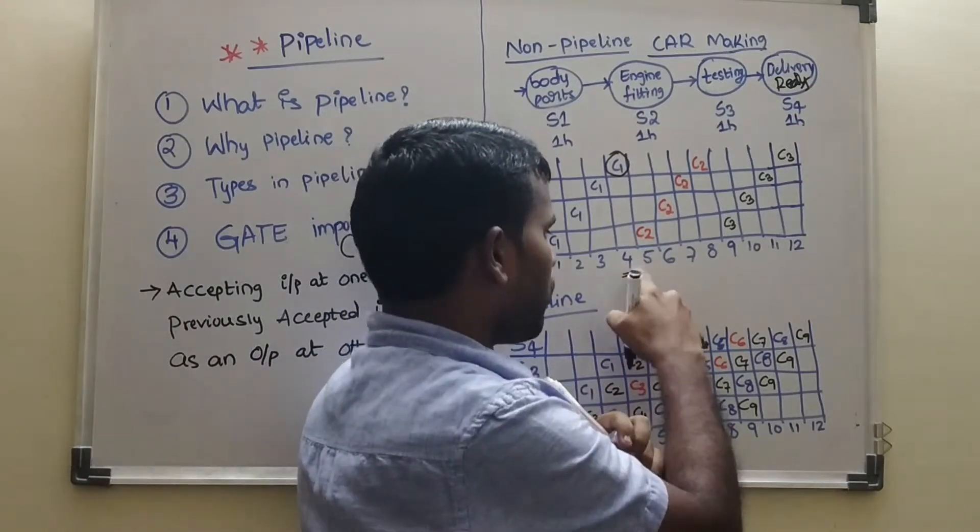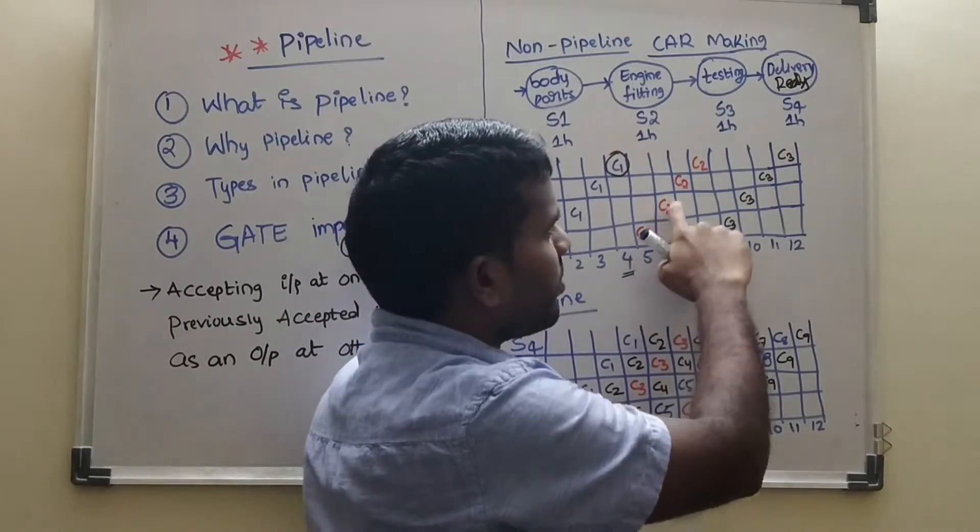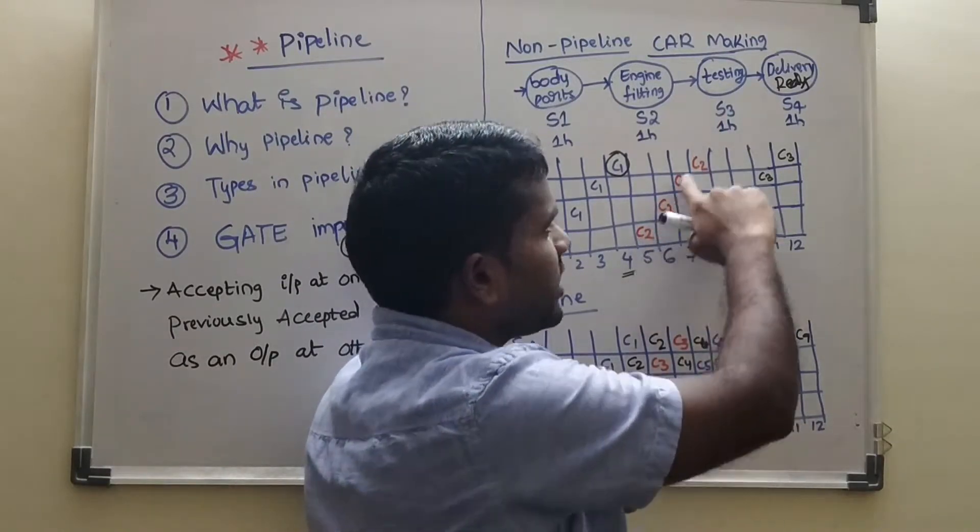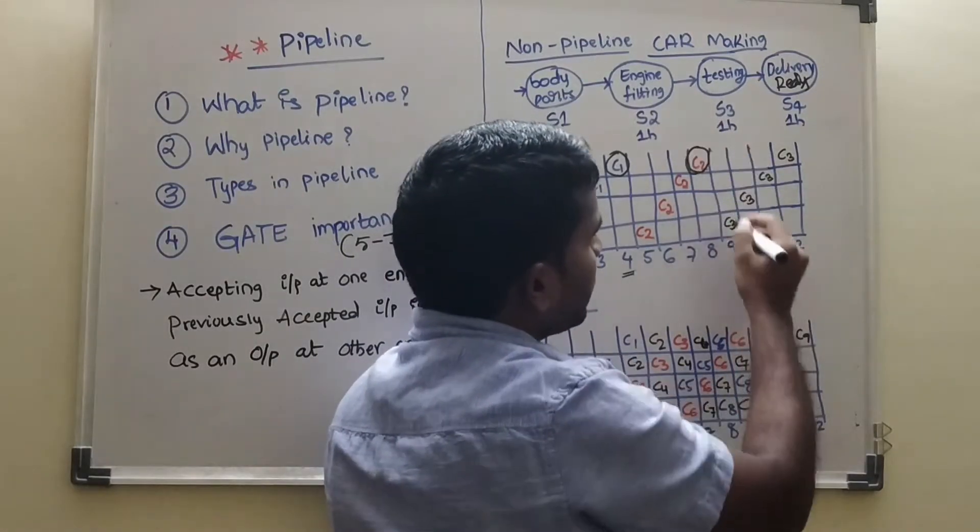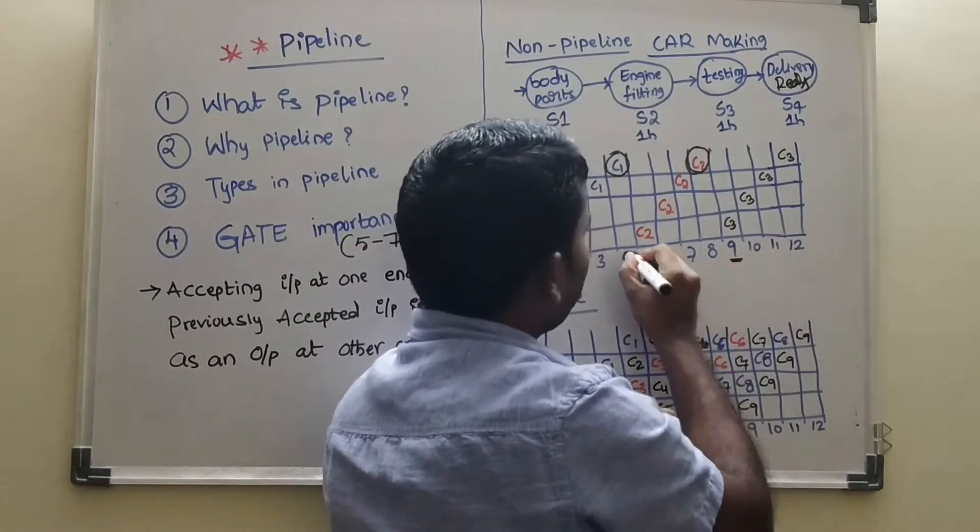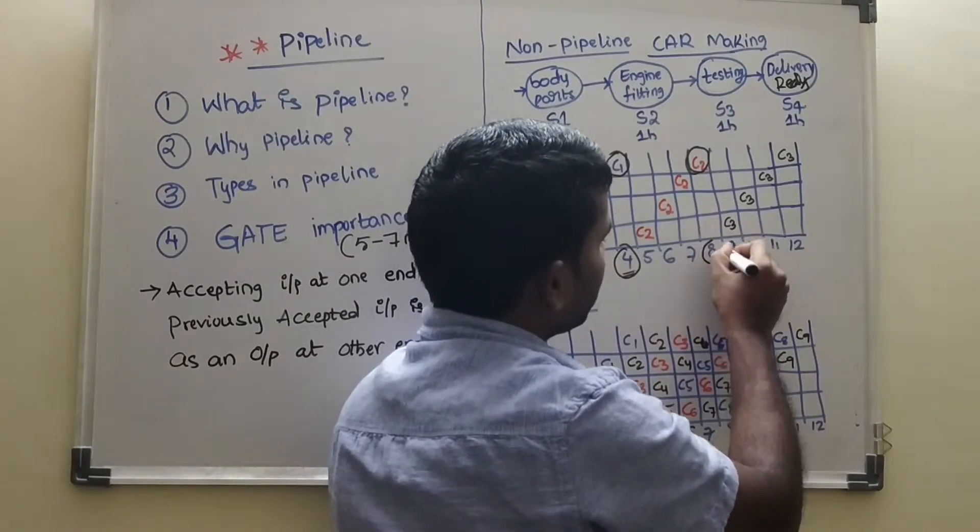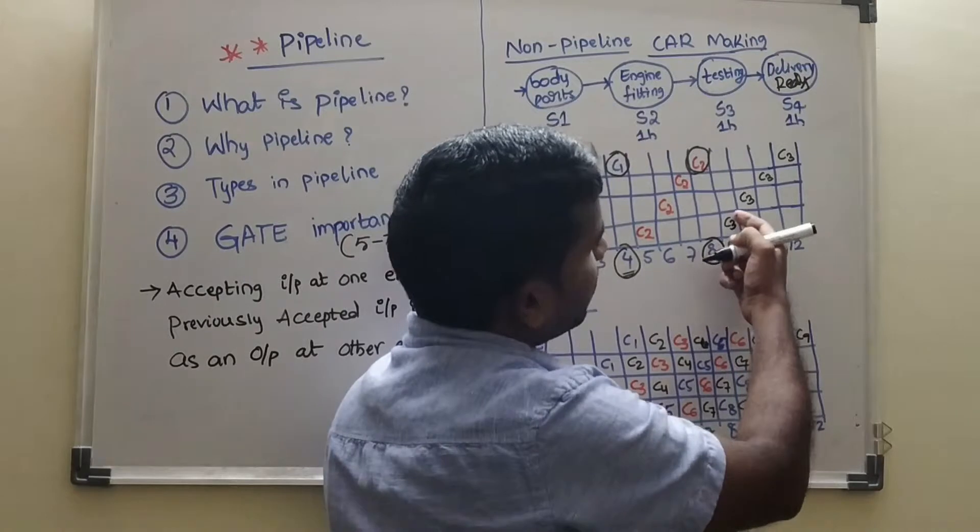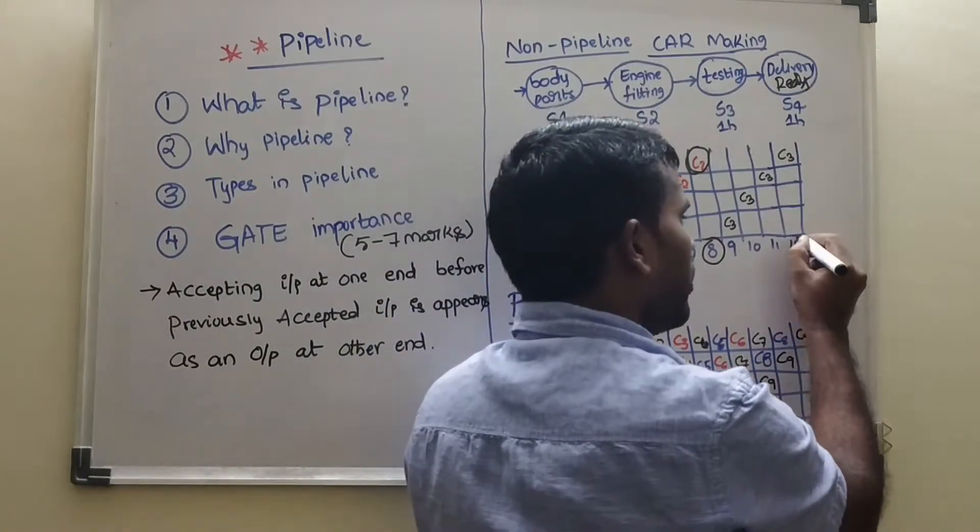In 4th hour, after this output, in 5th hour or 5th cycle we started, car 2 is making. So again it has taken 4 hours. Then it completed here. Then later, in 9th hour, it completed at 4th and 8th. In 9th hour, again car 3 is came into the picture and it has taken 12 cycles.